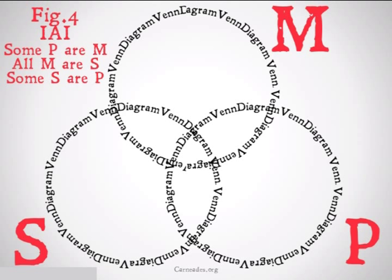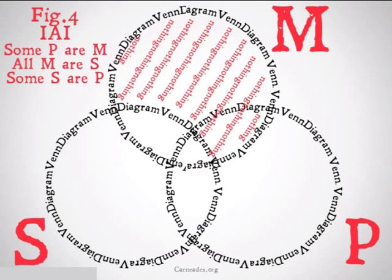Figure 4 IAI, some P are M, all M are S, therefore some S are P. It's important to know that you should always do the universal premise first. So we're going to do all M are S first, we'll shade that in.